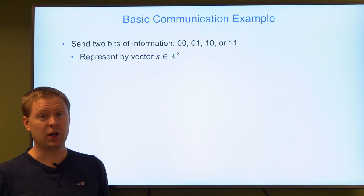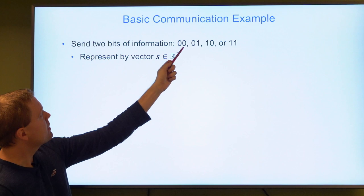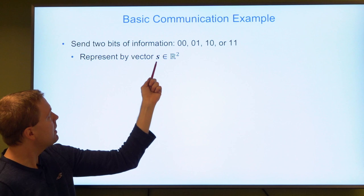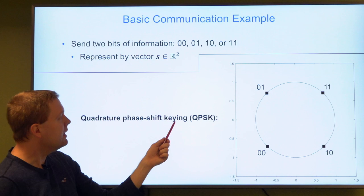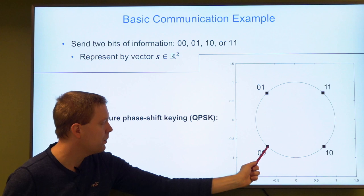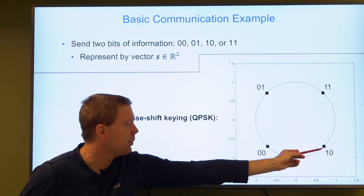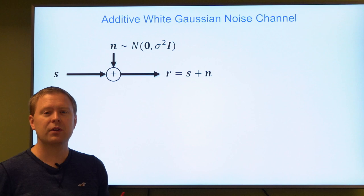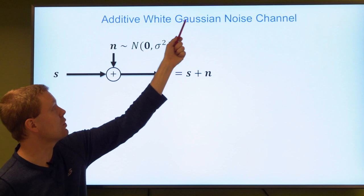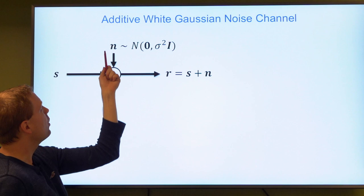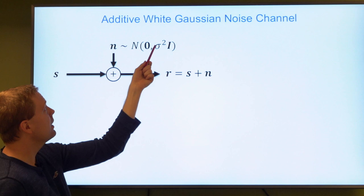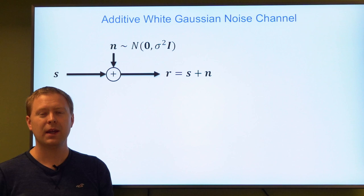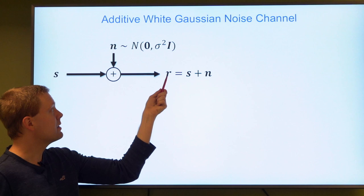Let me give a basic communication example. Say we send two bits of information — 00, 01, 10, or 11 — represented by a two-dimensional vector S. This is called quadrature phase shift keying (QPSK), where each bit combination maps to one of four points. The classical additive white Gaussian noise channel adds noise vector N — two-dimensional, zero mean, variance sigma-squared — to S, giving received signal R. The detection problem is to guess which S was transmitted when we observe R.